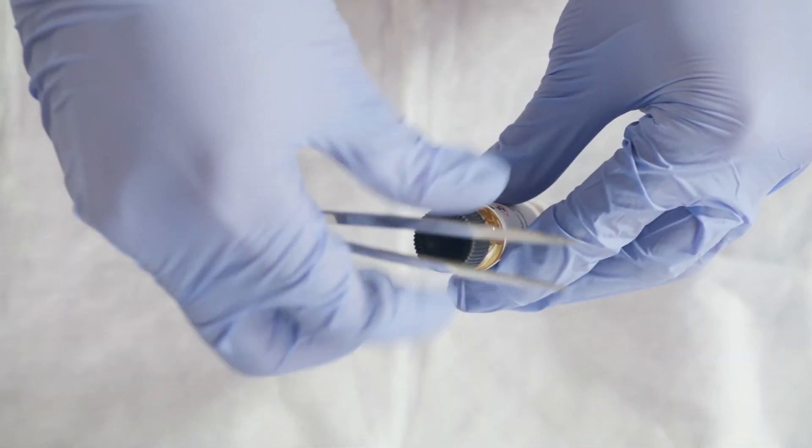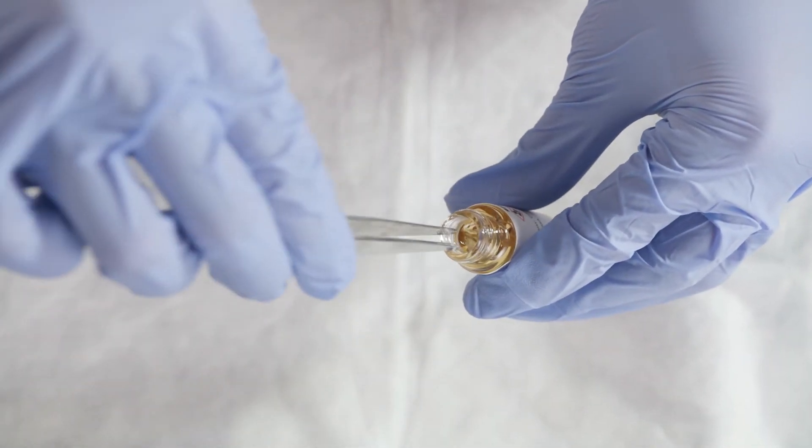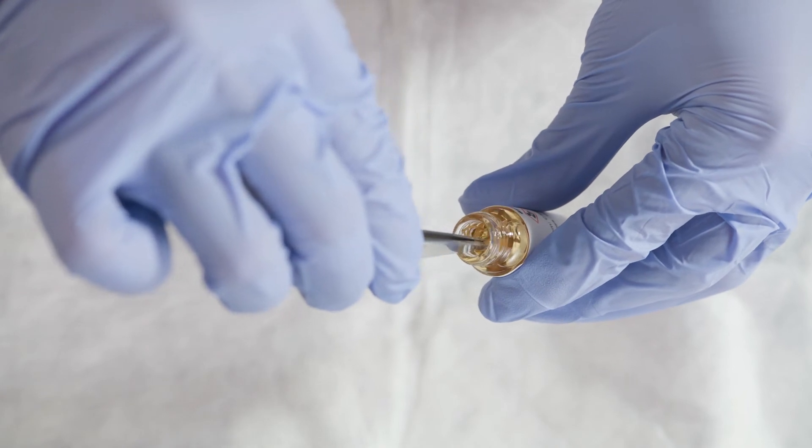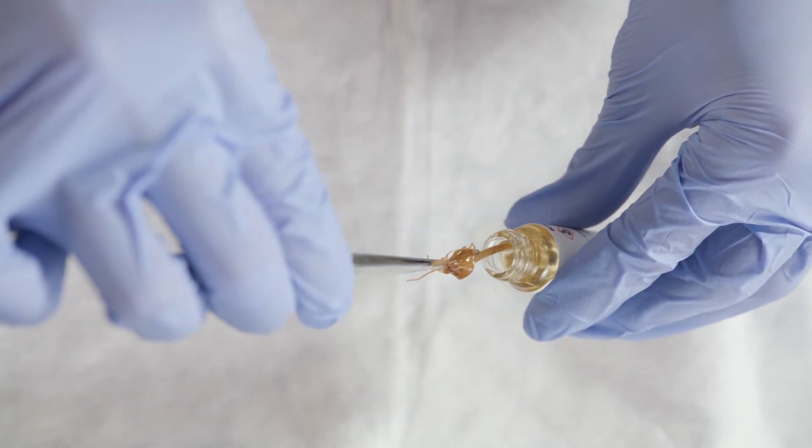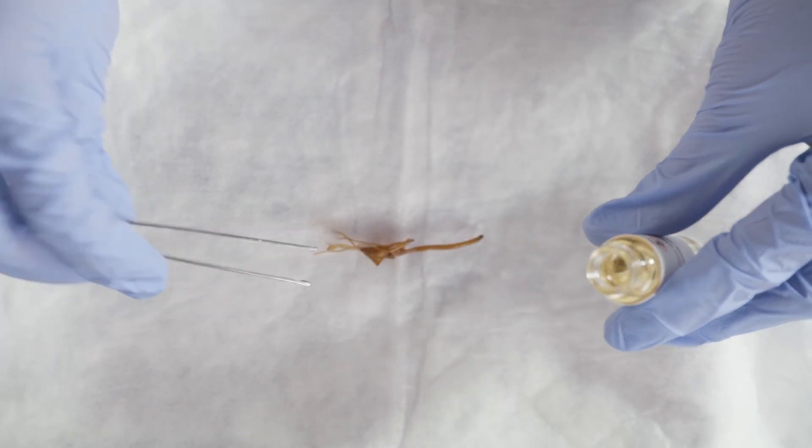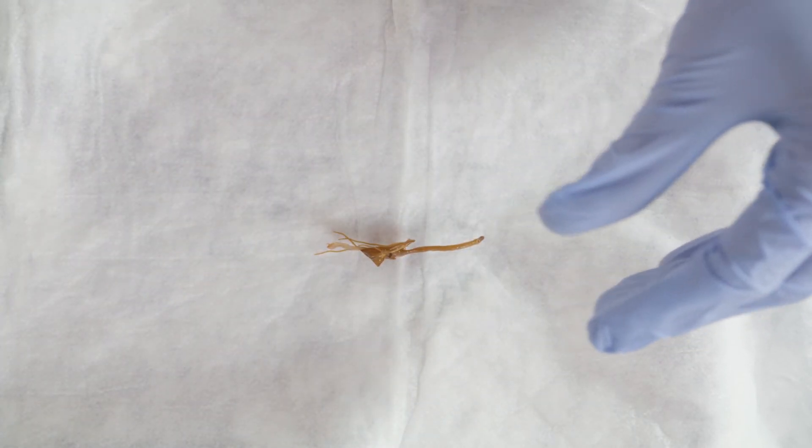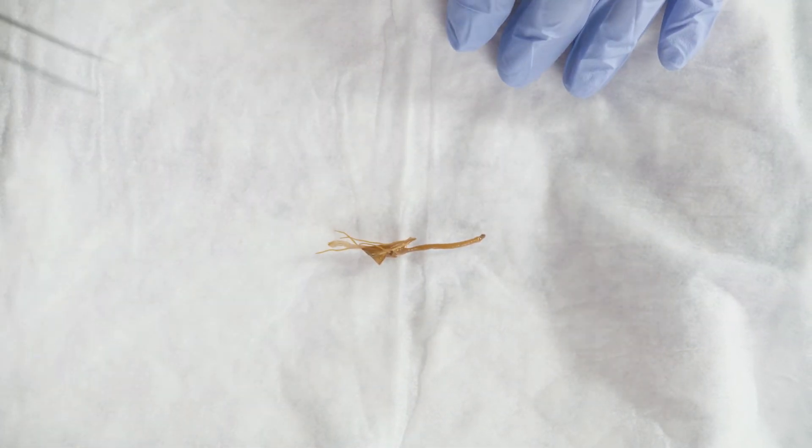When removing a specimen from its container, let it dry on your dissecting tray by allowing the pad to soak up the excess preservation fluid. If the flower is large enough, you can gently adjust it to catch all the excess fluid or pat it dry.